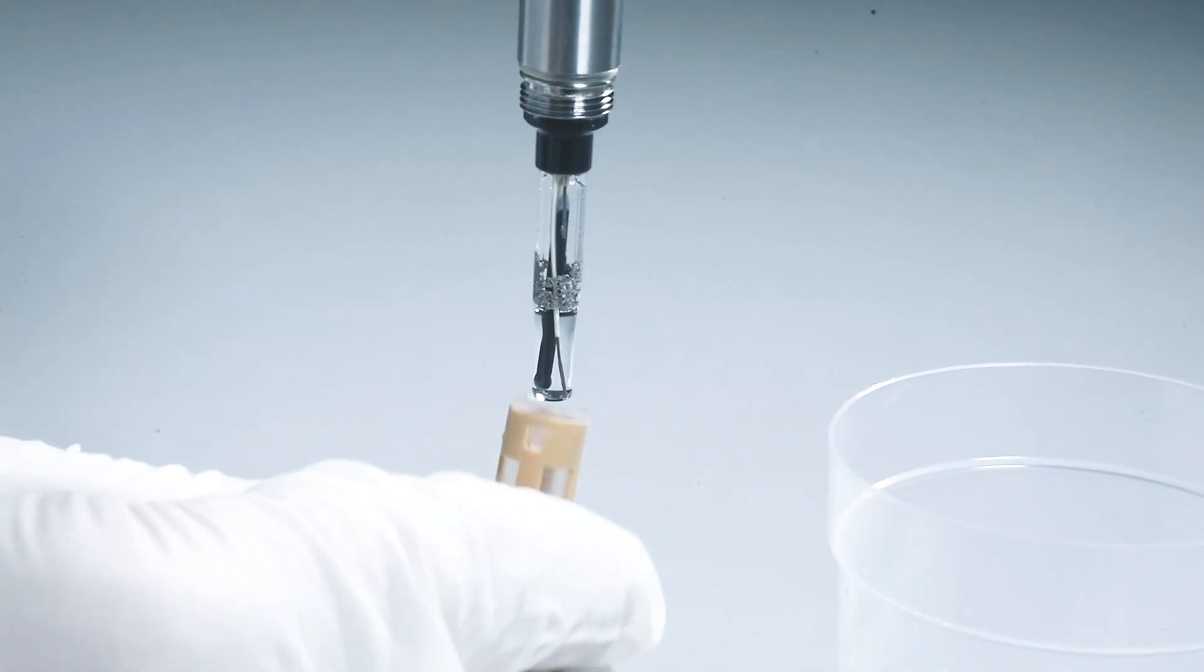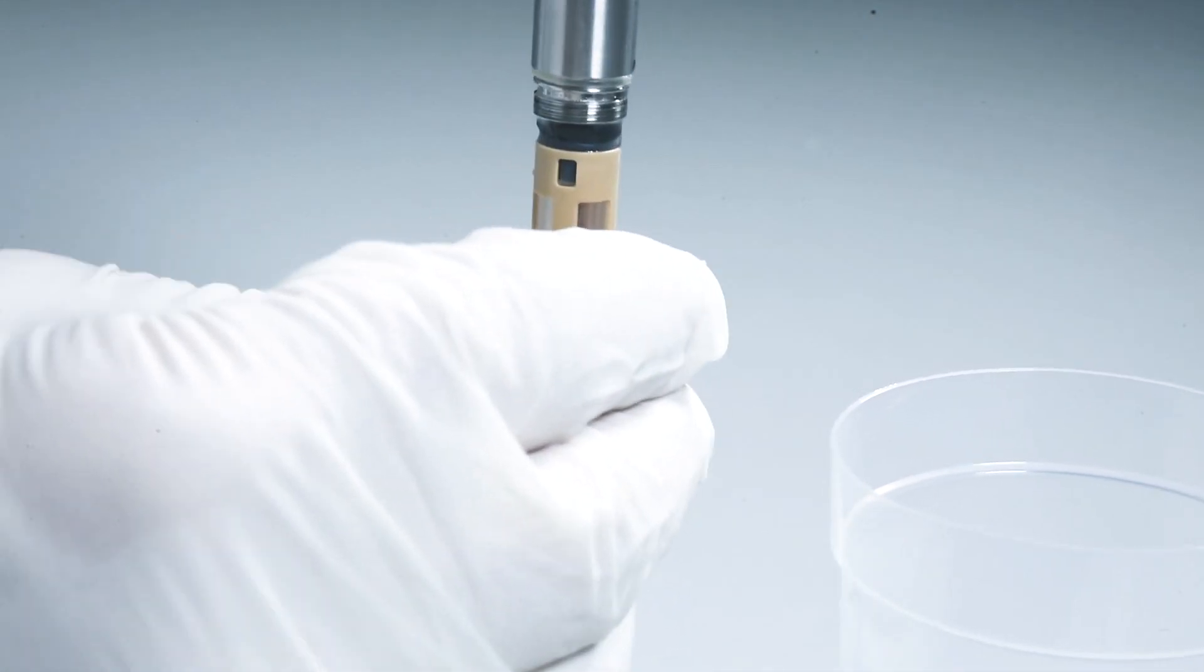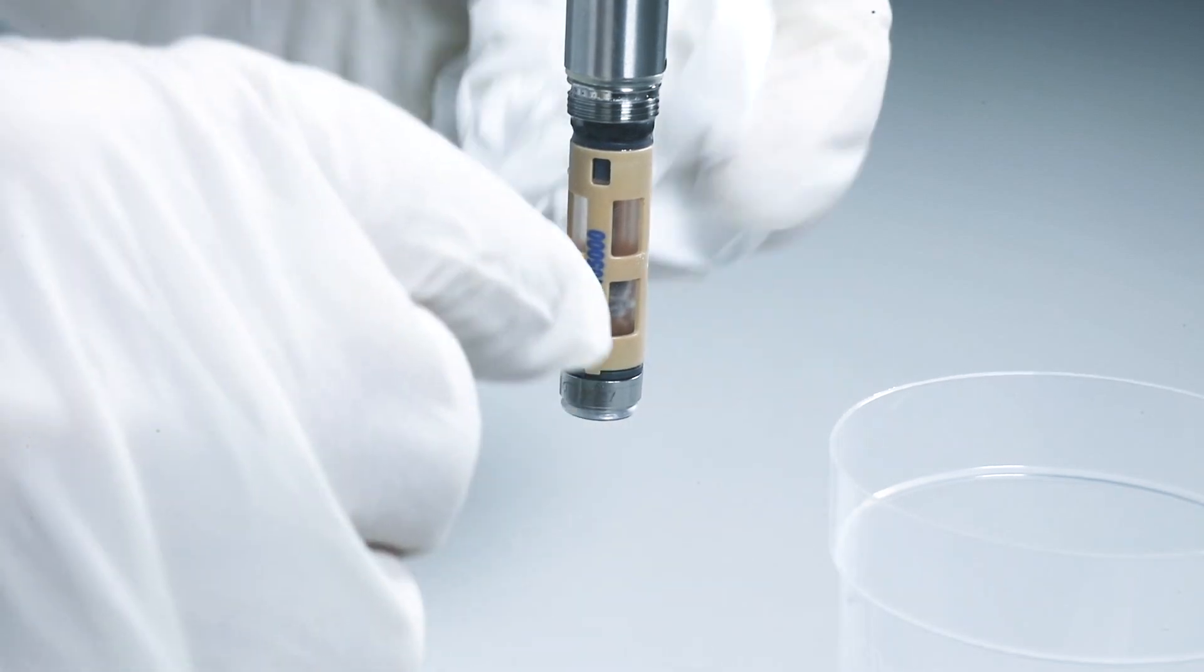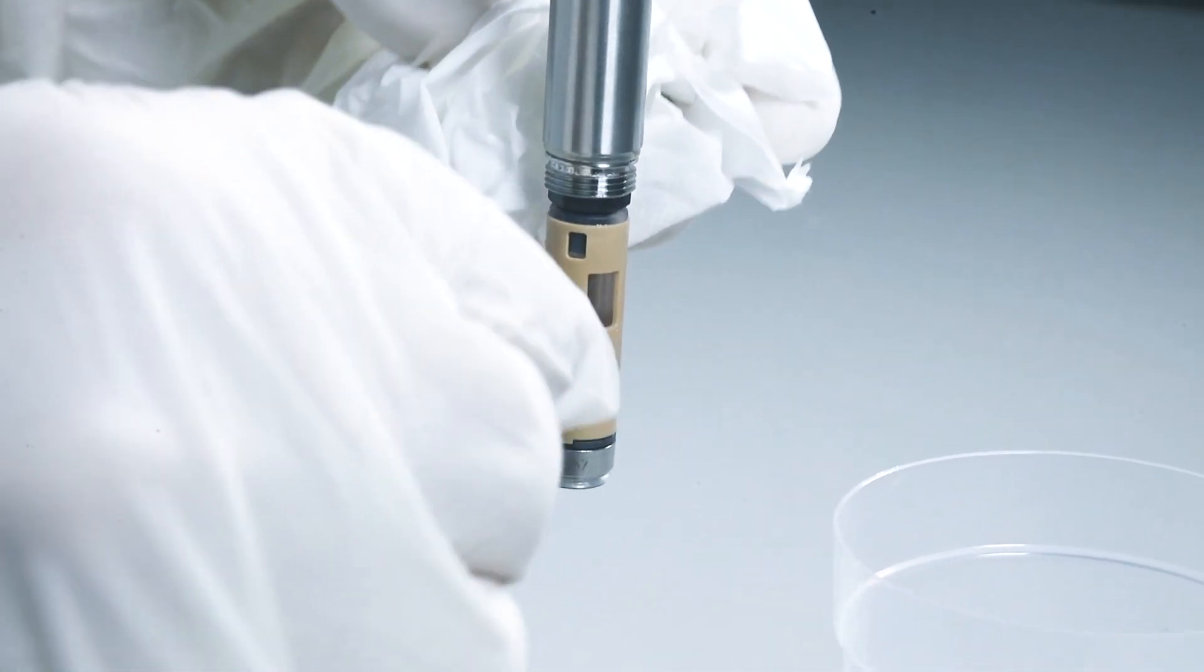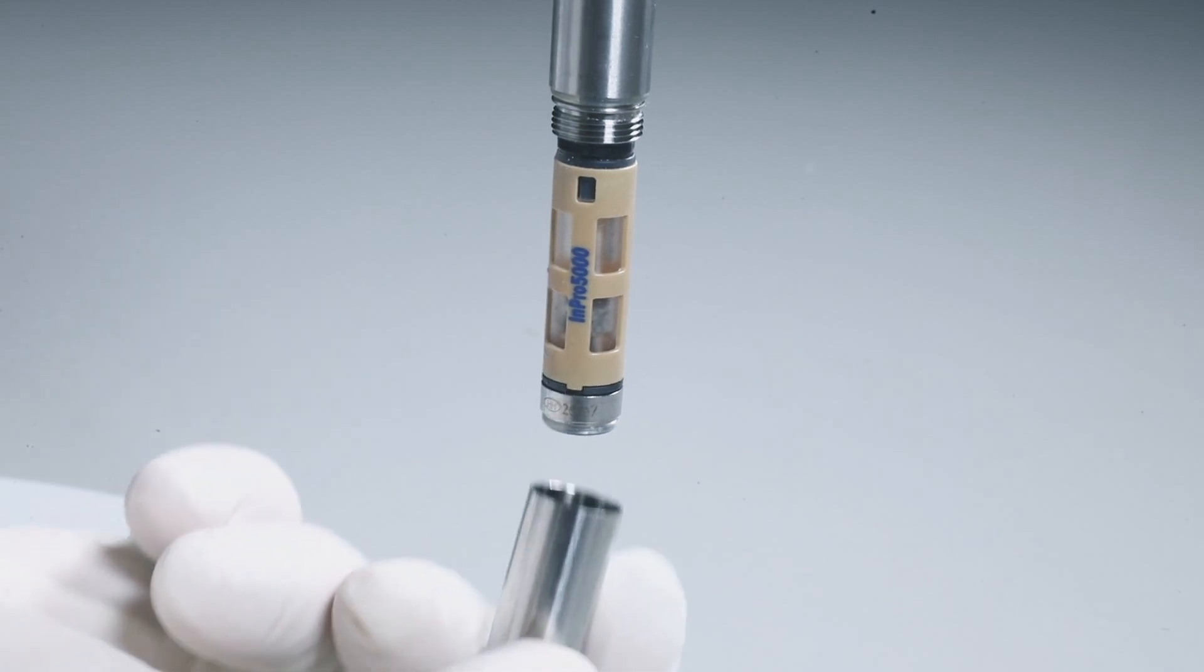Carefully push the membrane body onto the pH probe. Do not touch the pH probe's glass. With a tissue, remove any excess electrolyte. Reattach the cap sleeve.